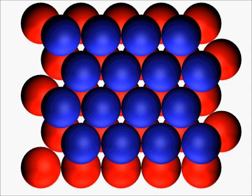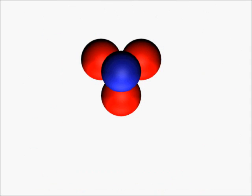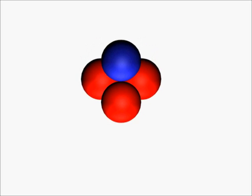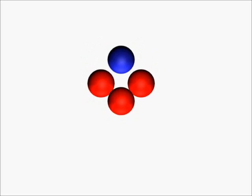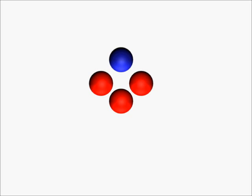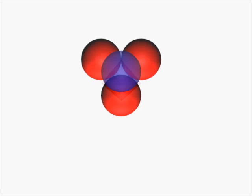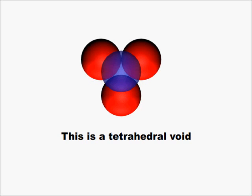The tetrahedral voids are created by four spheres. First we make the spheres a little smaller in order to understand the shape. Then we join the center of the spheres by straight lines. The shape is regular tetrahedral. So the void is called tetrahedral void.